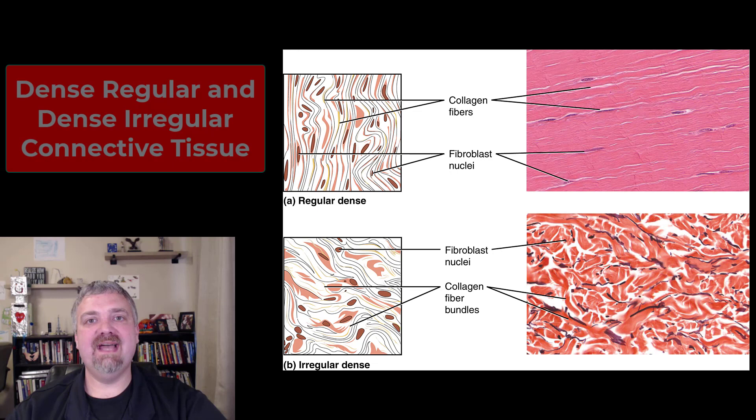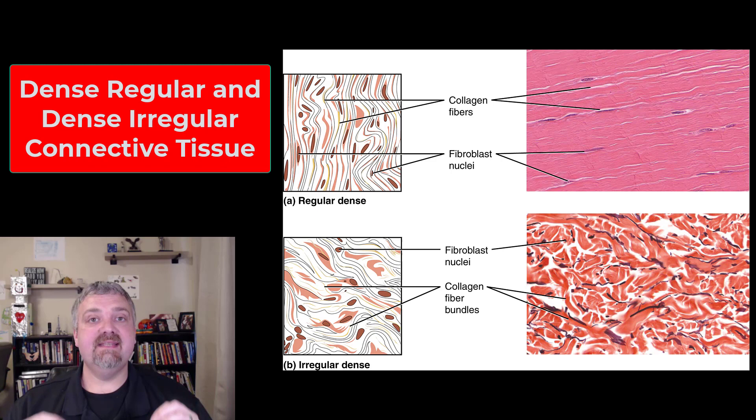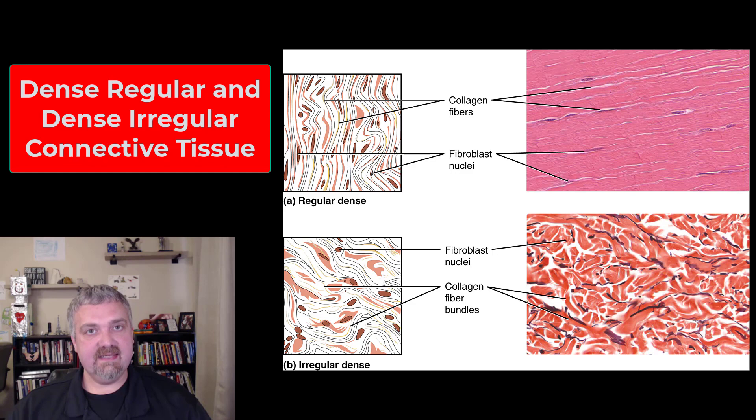Hey everybody, Dr. O here. In this video we're going to talk about the two types of dense connective tissue. Dense connective tissue is called that because it has more collagen fibers, making it more dense than loose connective tissue. There are two types we're going to talk about: dense regular and dense irregular connective tissue. Let's go ahead and dive in.